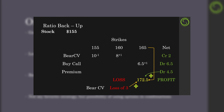Profit is higher than 172.50 and loss is lower. If we were just to buy the 165 call outright our break-even would be 171.50, but since we have the bear call vertical and that loss of 3, it pushes out our break-even point. That is why I'm not really a fan of this setup.